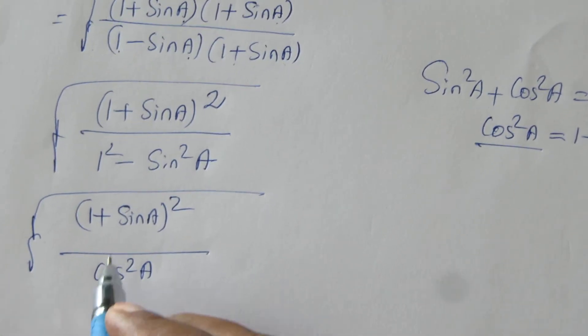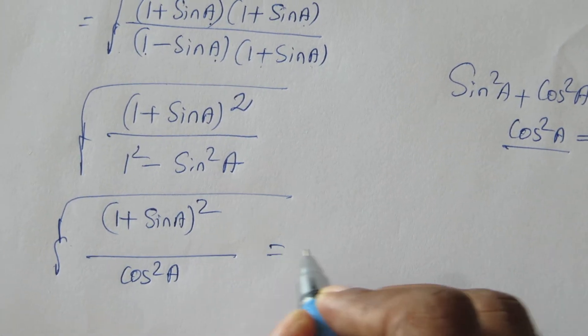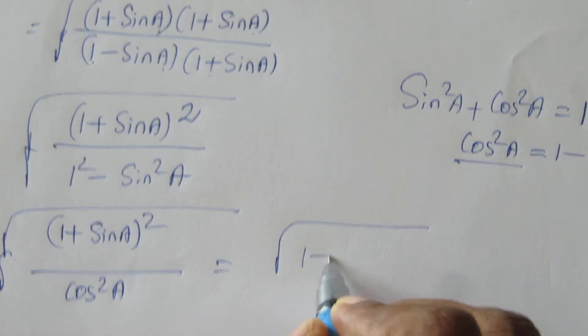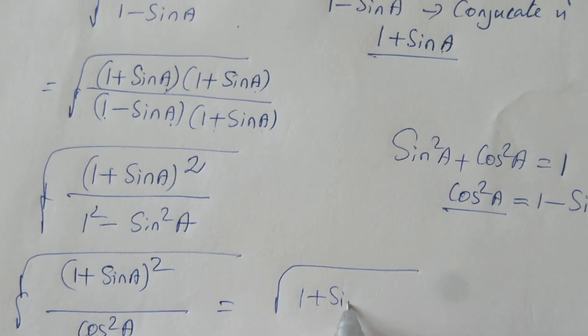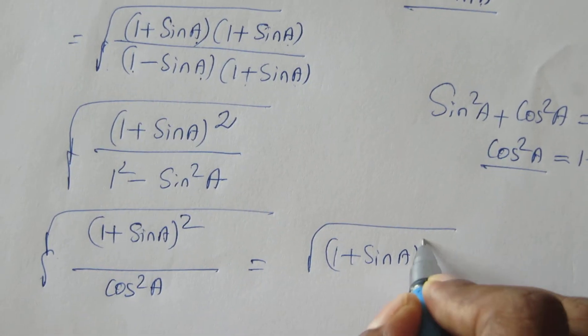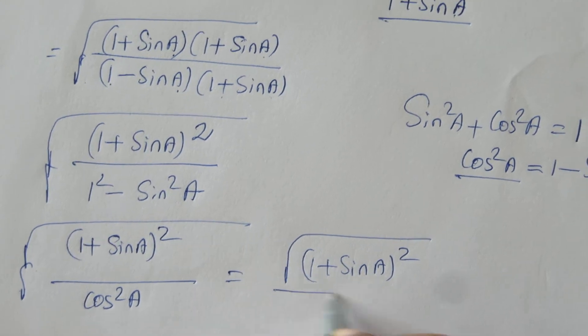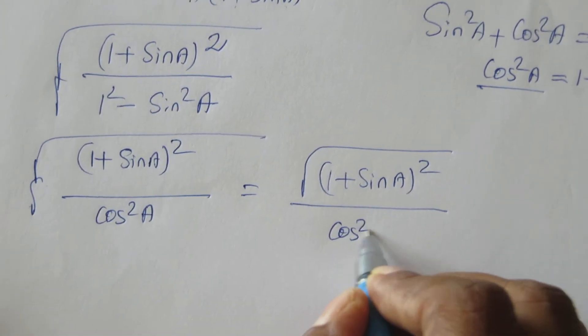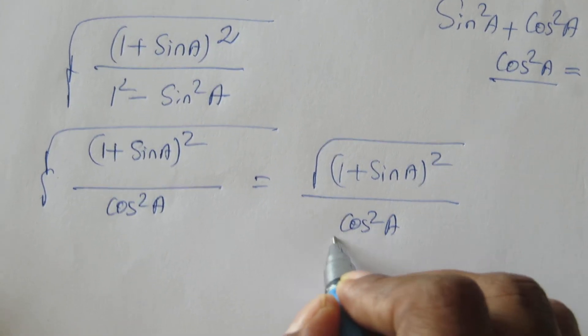So we have 1 plus sin A whole square divided by cos squared A. Now we split the square root of 1 plus sin A whole square by cos squared A.